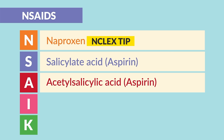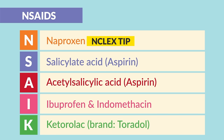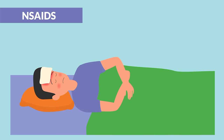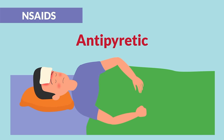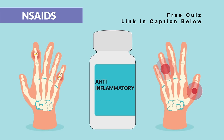Aspirin is also an antiplatelet used to thin the blood. I is for ibuprofen and indomethacin — everyone should know ibuprofen. A key one is K for ketorolac, brand name Toradol — this is the only NSAID we can give through an IV. The indication is to reduce fever, known as an antipyretic, as well as anti-inflammation, typically given for gout and arthritis like RA.